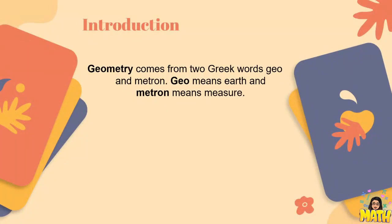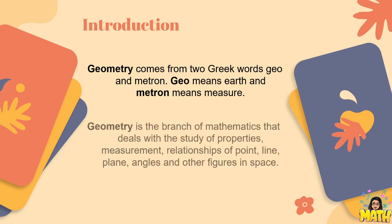So ano nga ba ang geometry? It comes from two Greek words, geo and metron. Geo means earth and metron means measure. It means that we're going to measure the earth and the things around it.